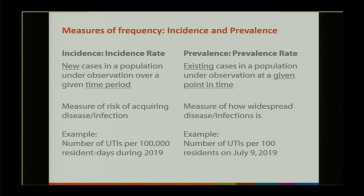An example of a measure that gives you an incidence rate from NHSN would be the number of urinary tract infections per 1,000 resident days during 2019. Prevalence is the existing cases in a population at a given point in time, and this tells you how widespread an infection or disease is. An example would be: how many people in nursing homes on July 9th, 2019 have a urinary tract infection? Slightly different measures give you different information, and what I'm talking about today is prevalence and prevalence rates.